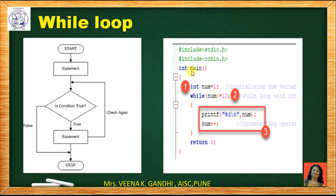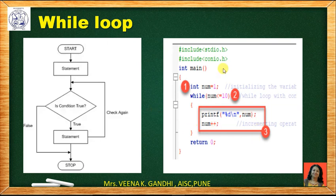In the main function, we define the variable 'num' of type integer and initialize it to 1. In the while loop, the condition is: while num is less than or equal to 10. If true, the body of the loop executes — it prints the number, then num is updated by num = num + 1, so num becomes 2. Again we check the condition; this continues until num becomes 11, when the condition fails and the loop terminates. This program prints the numbers 1 to 10.